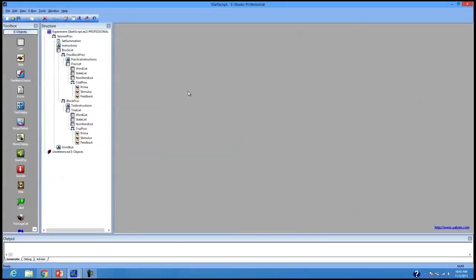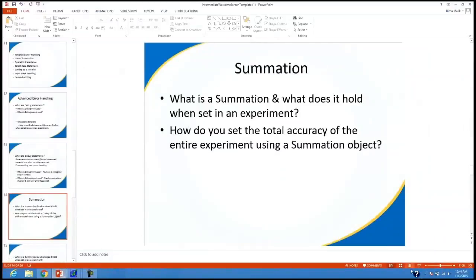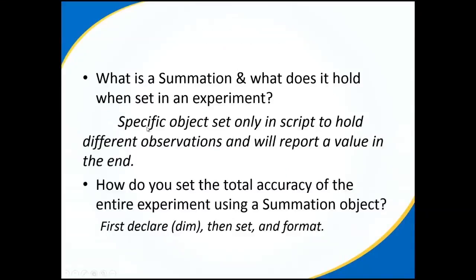Now we've set that summation. Going back to our slide, let's see if we've answered the summation question — and we have. The summation object is a specific object set only in script to hold different observations and report a value in the end. How do you set the total accuracy using a summation object? We've started that process: we declared it in the user script, set it so it's ready to go in the actual run of the experiment, and the last part is where we format it — we take whatever value we want reported and make it what we want to see: percentage, decimals, or whatever specific value you want.